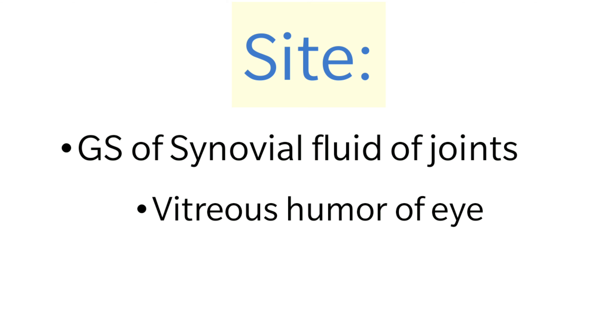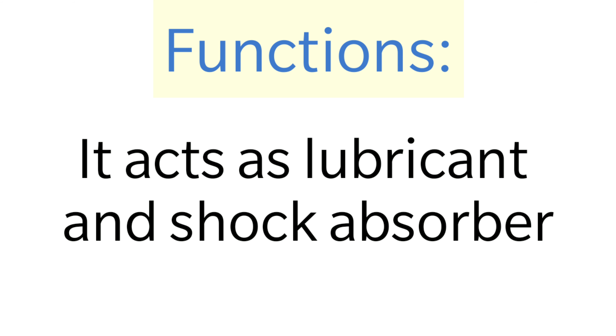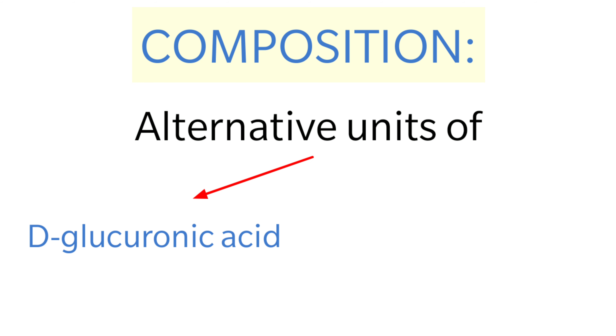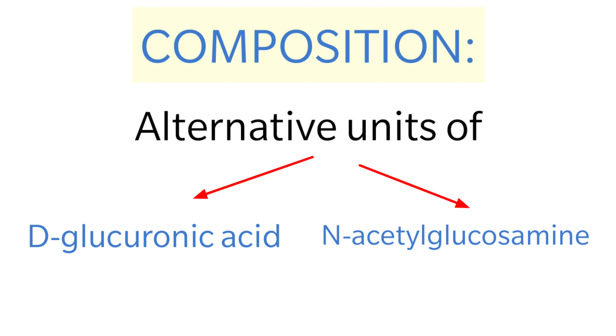Around the ovum, hyaluronic acid is present in the form of a gel. Its function is that it acts as a lubricant and shock absorbent. The two sugar components of hyaluronic acid are D-glucuronic acid and N-acetyl glucosamine.